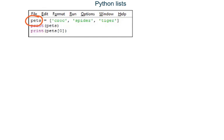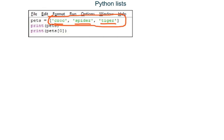In this program, line one creates a list named pets. Inside the square brackets we have one, two, three strings and each string is a separate item in our list. We call the items in a list the elements. Each element in a list is separated from the next element by a comma.